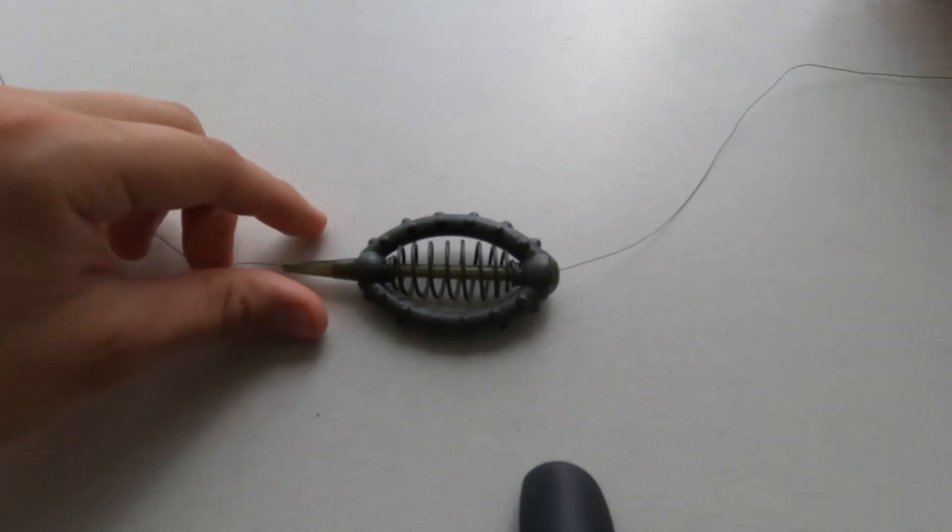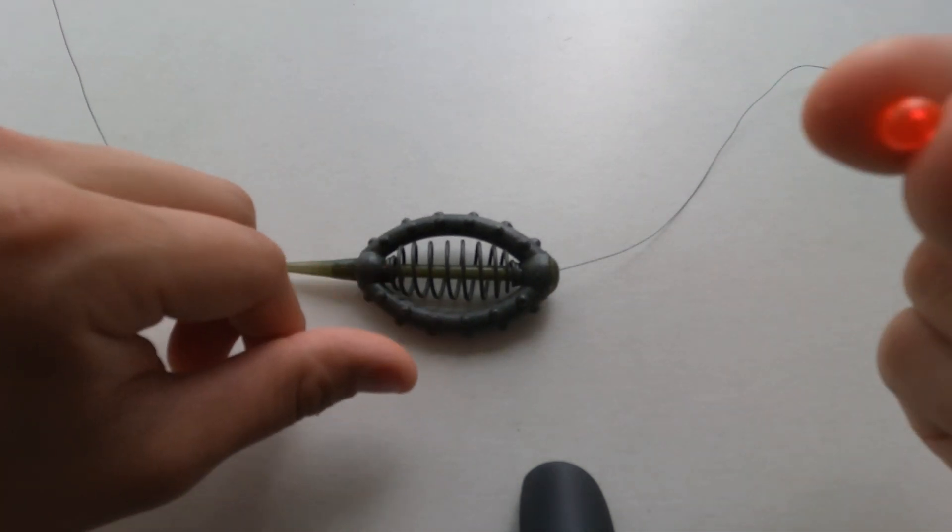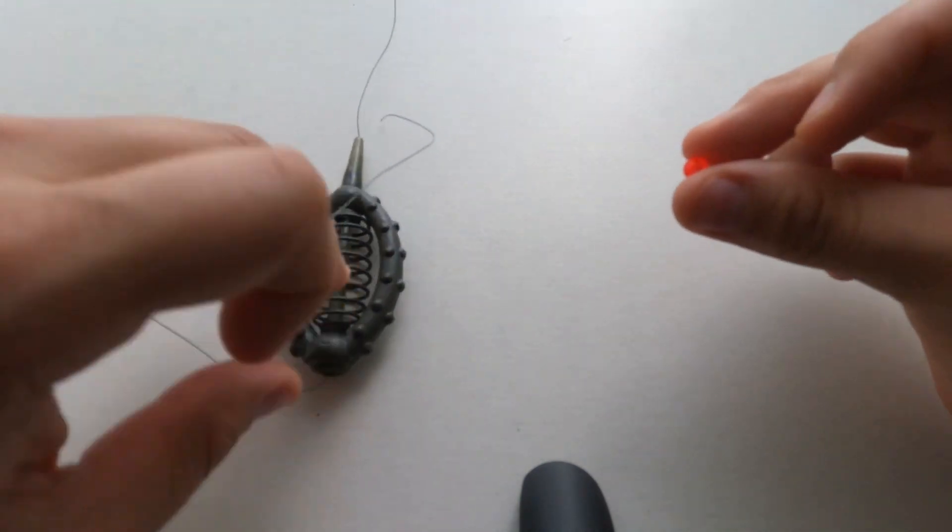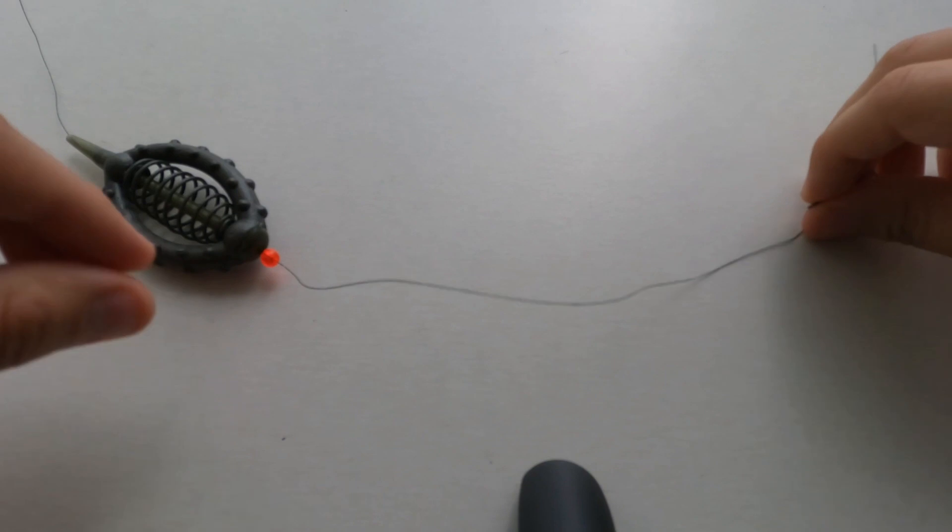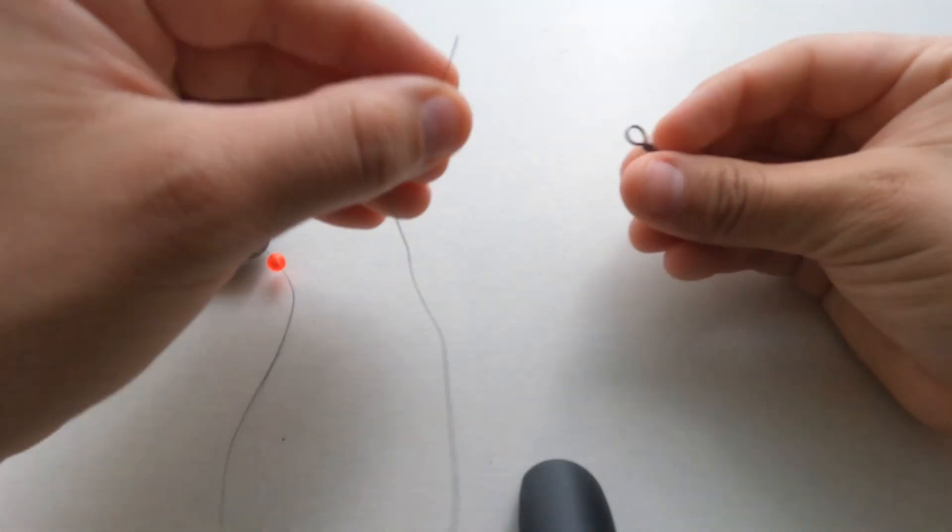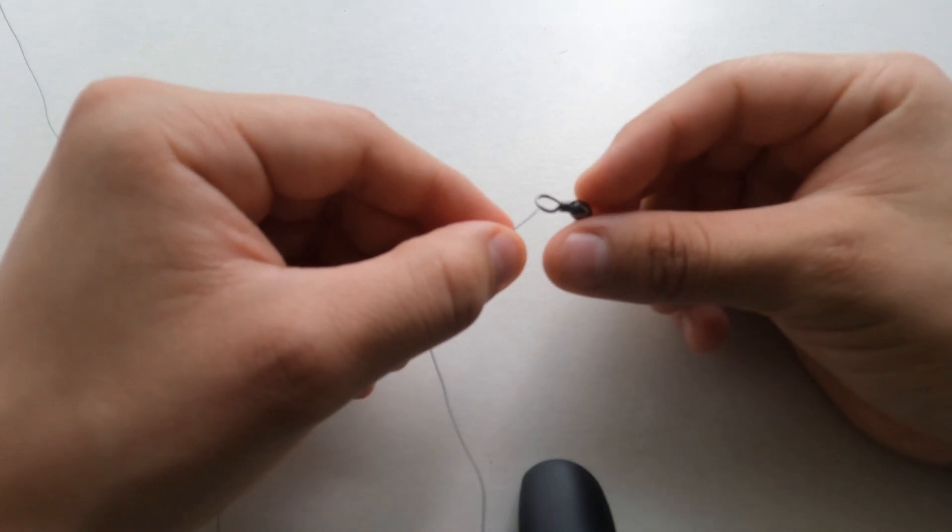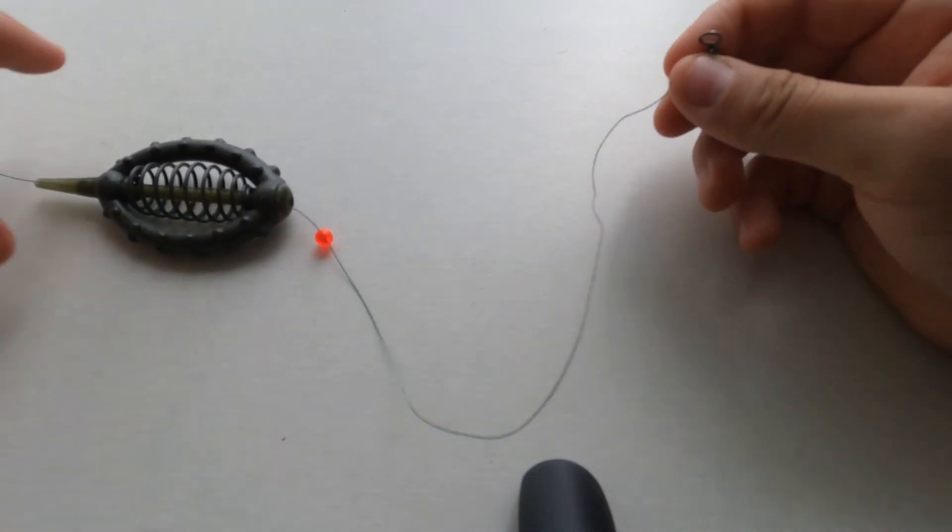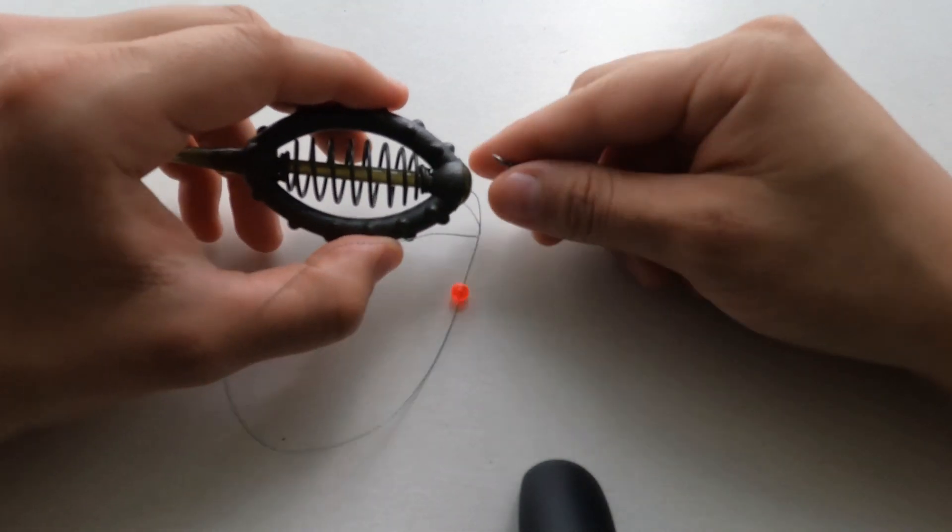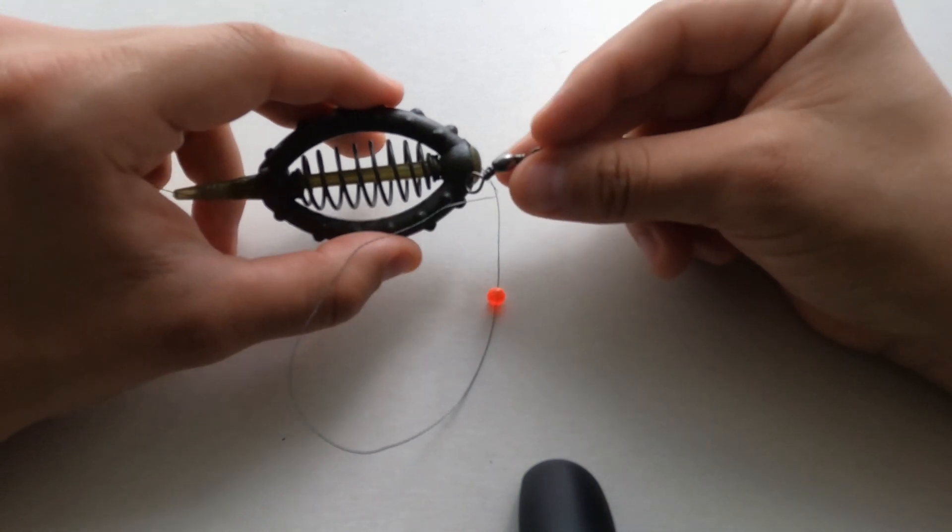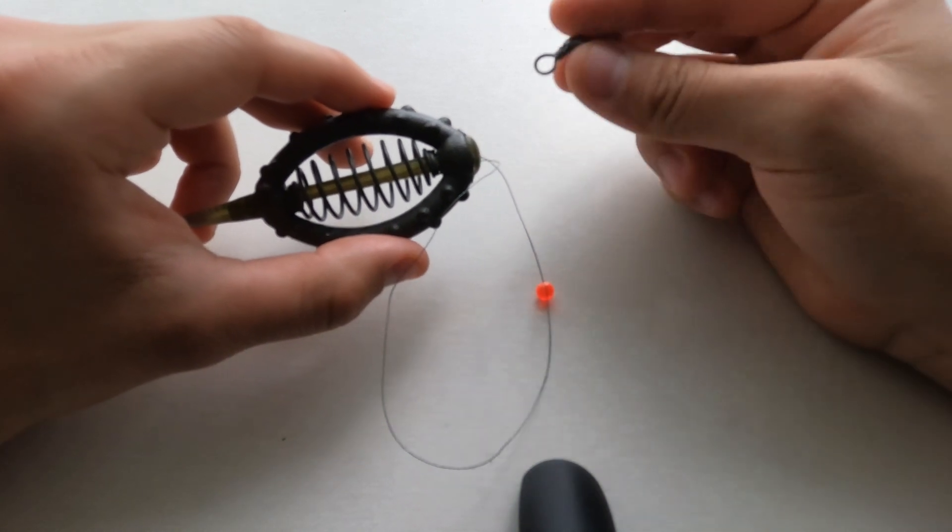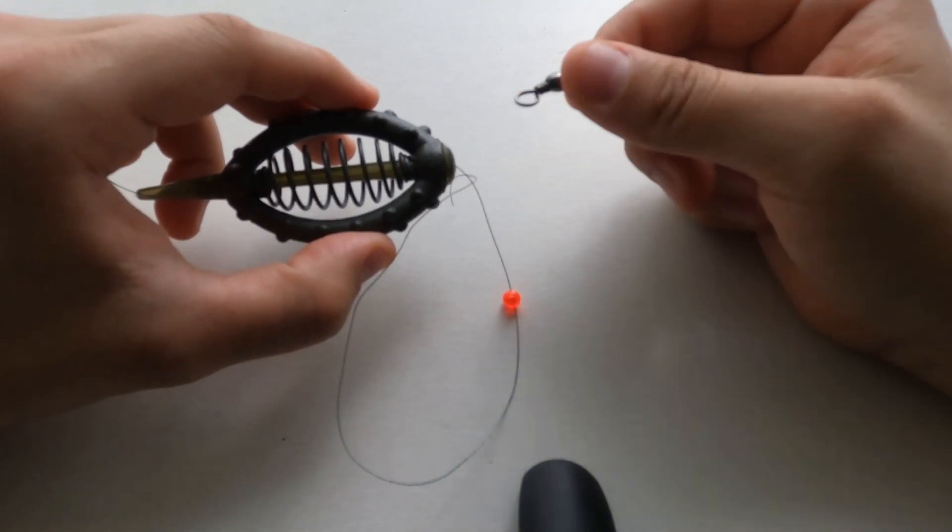The next step is to get the bead that we talked about earlier. You want to run the line through the bead. The reason why we need the bead is because we're about to connect the metal swivel. If the bead wasn't there, the method feeder would just go directly to the swivel. Can you still fish for carp like this? Yes. Is it the best way? No.